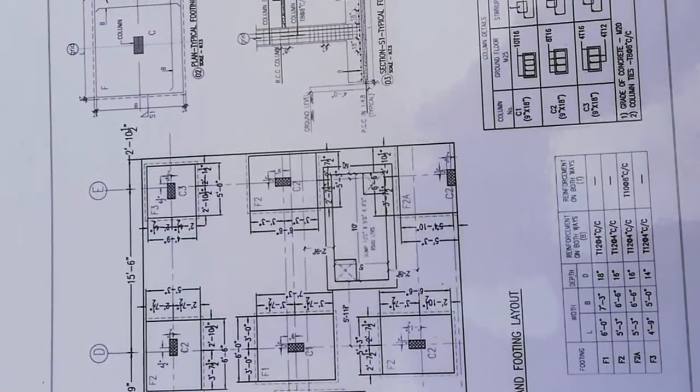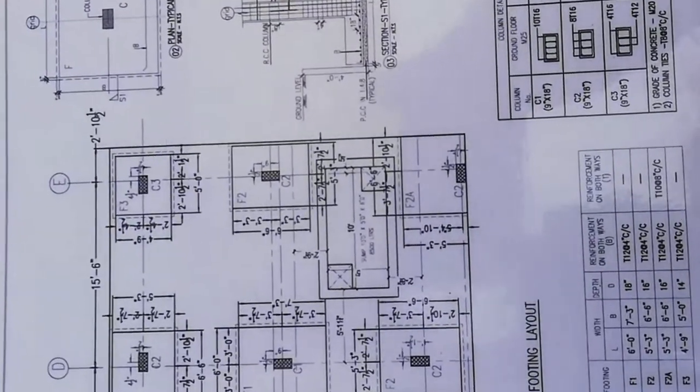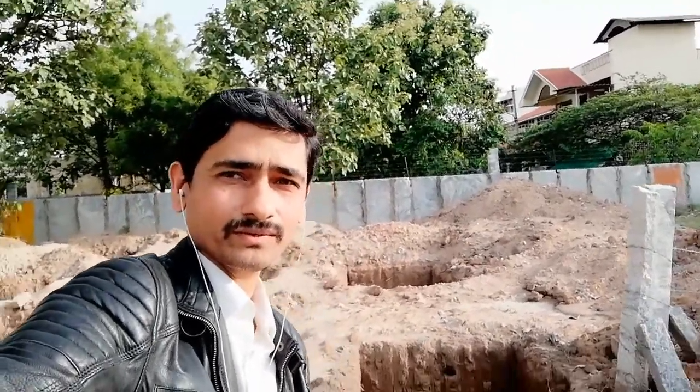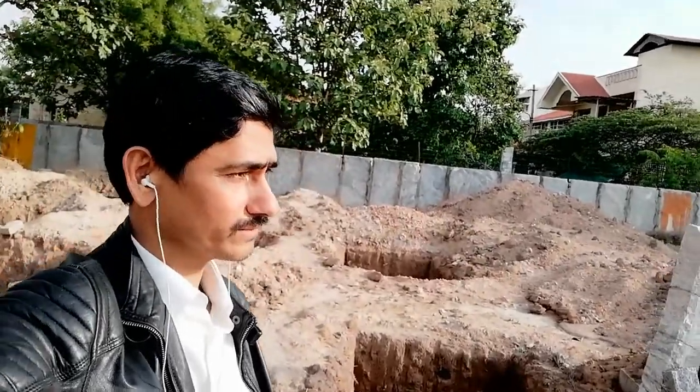This is the plan provided by the engineer and architect — just for information, including the balcony. From today I am going to start a series on building construction. Even though I'm not much qualified in engineering, I have a flair for construction. We started building a house on a full site of 30 by 40.